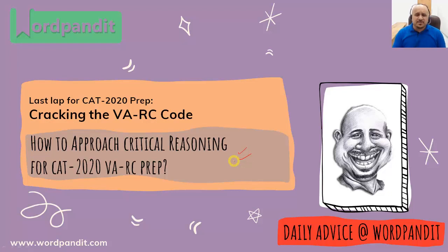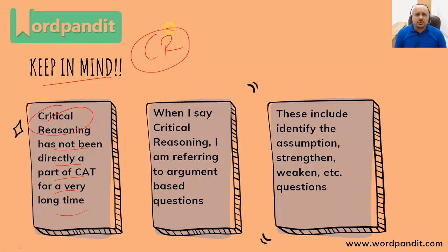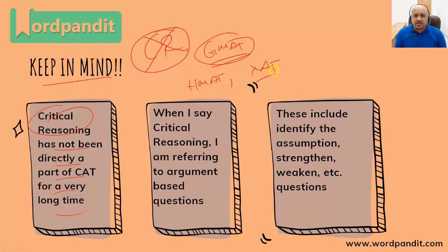Should you cover it? Should you not cover it? Should you skip it? What is the kind of preparation you should do? You've got to keep in mind that critical reasoning has not been directly a part of CAT for a very long time — there have been no CR as such in CAT for a very long time. The three exams where it is prominent are: number one, GMAT — it is a GMAT question type, very very popular on the GMAT, and one third of the exam is based on CR. Then NMAT and XAT have CR questions.